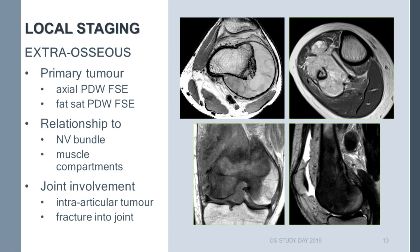For extraosseous local staging, we use PD and fat-suppressed PD-weighted sequences. This is a distal femoral osteosarcoma surrounded by what appears to be the raised periosteum, clearly separated from the popliteal vessels and the distal branches of the sciatic nerve by a clear fat plane. In this case of a proximal fibular lesion, there's encasement of the trifurcation and the anterior tibial arteries, so this patient is probably heading for an above-knee amputation. We also look for joint involvement, most commonly through the intercondylar notch on T1 or T2-weighted sequences.